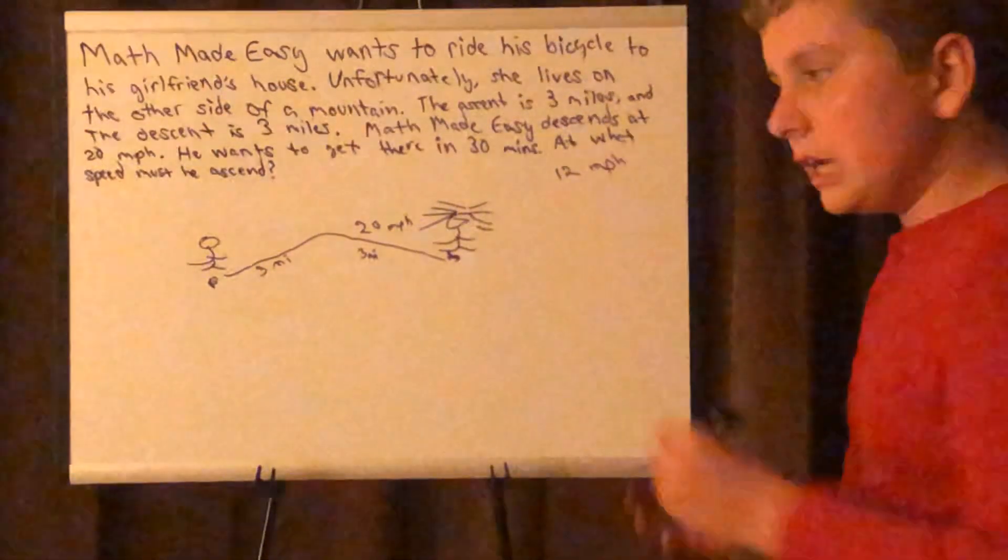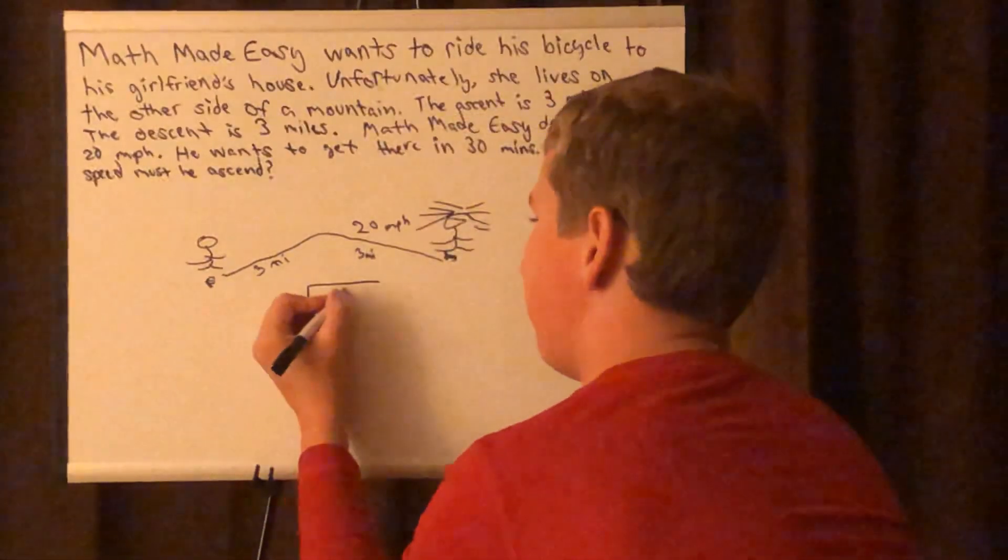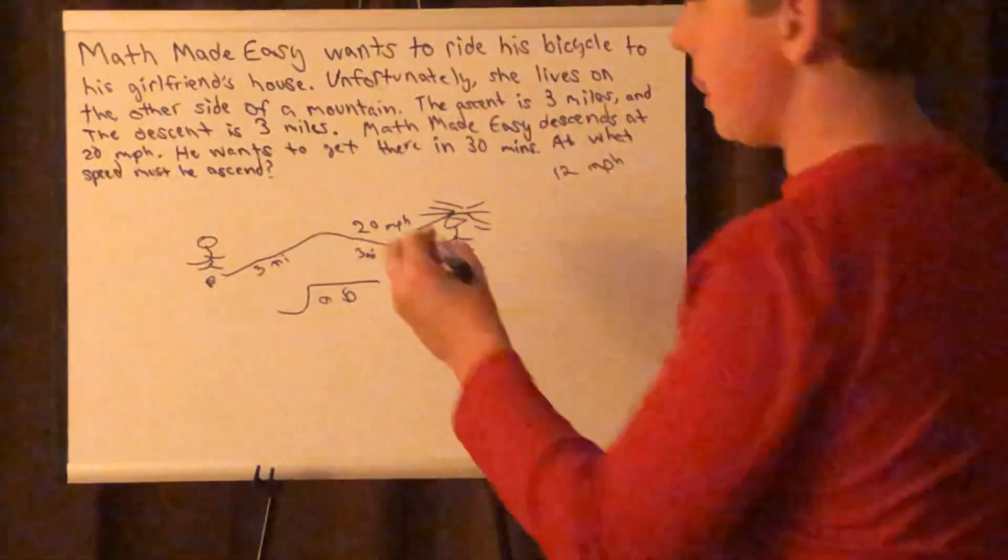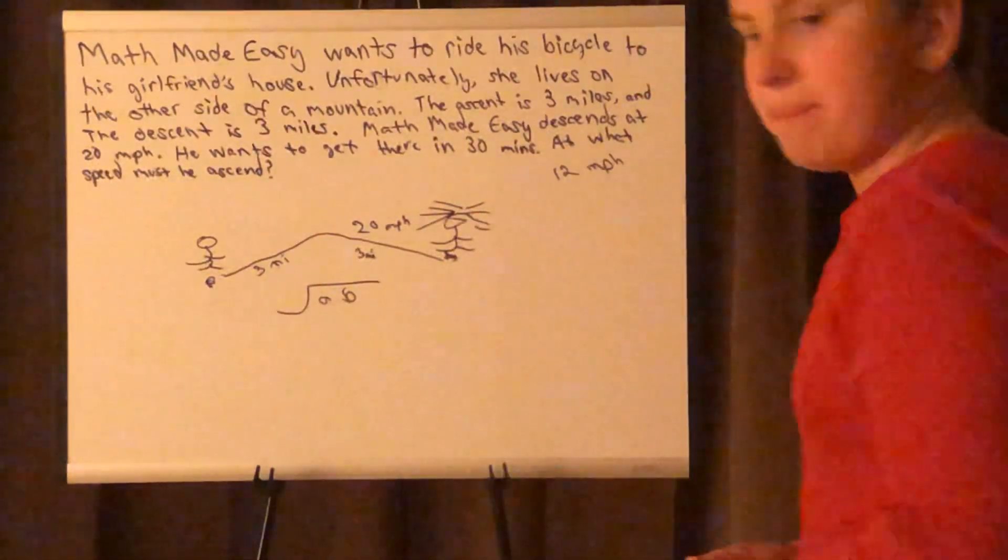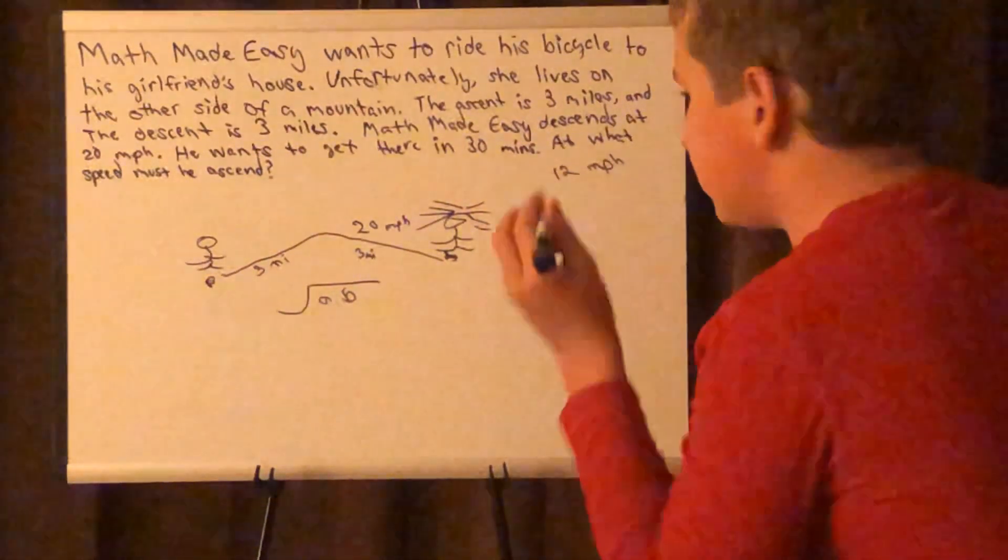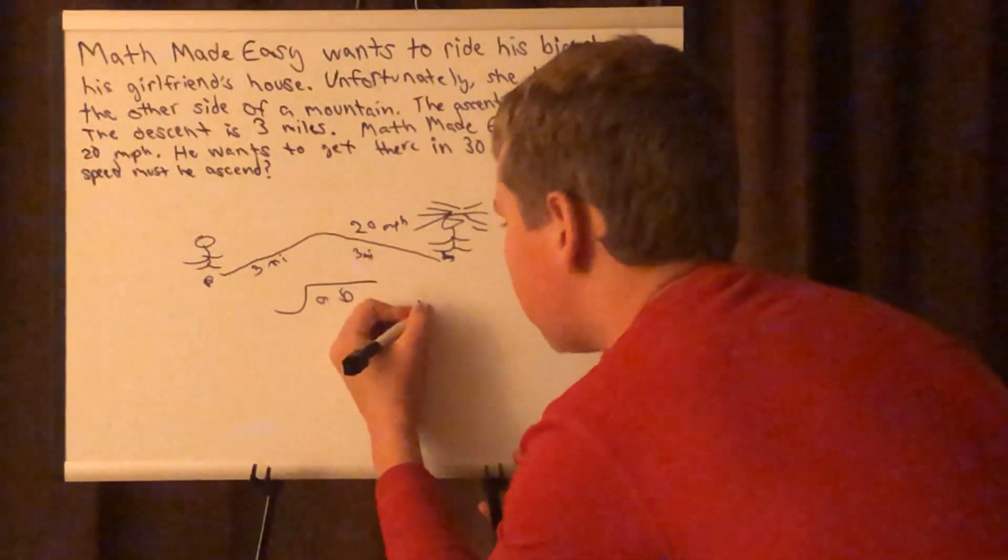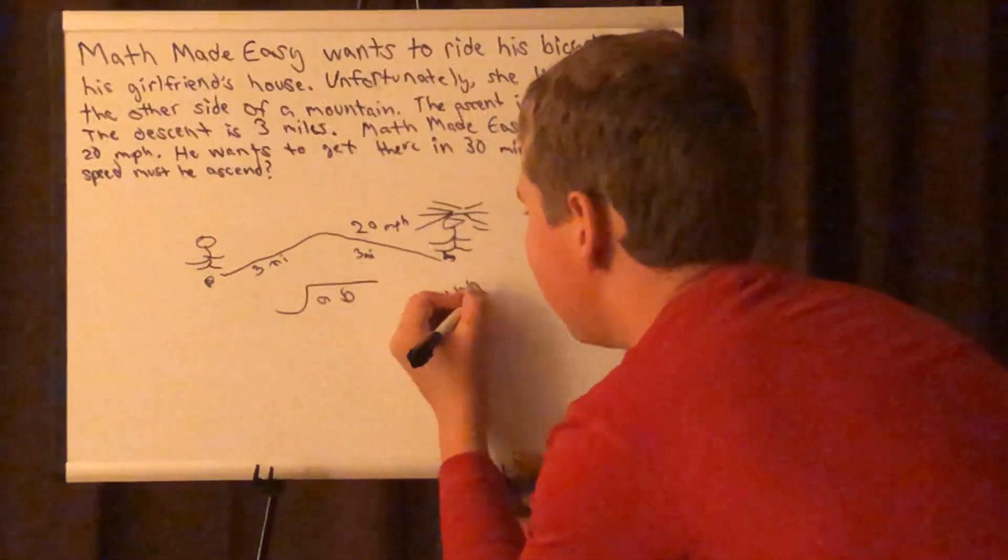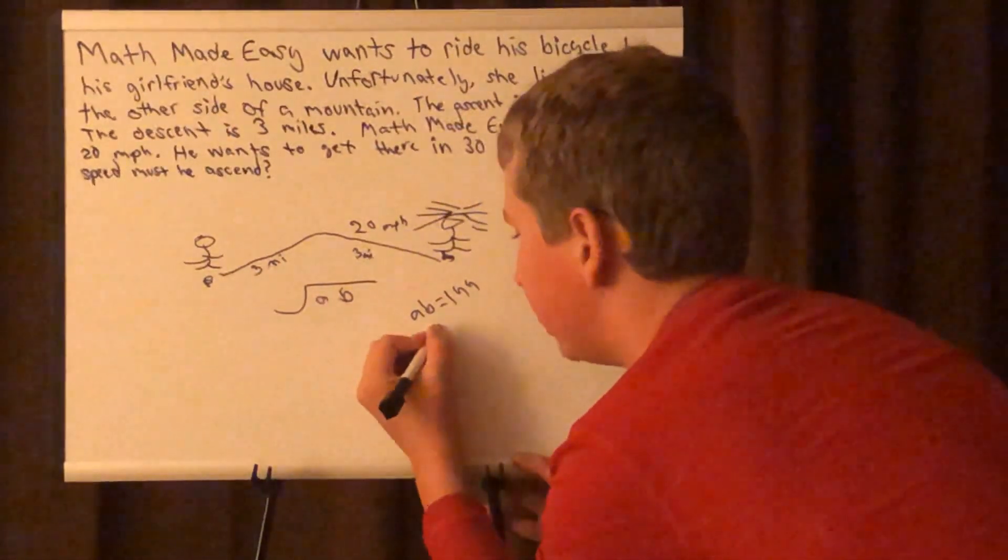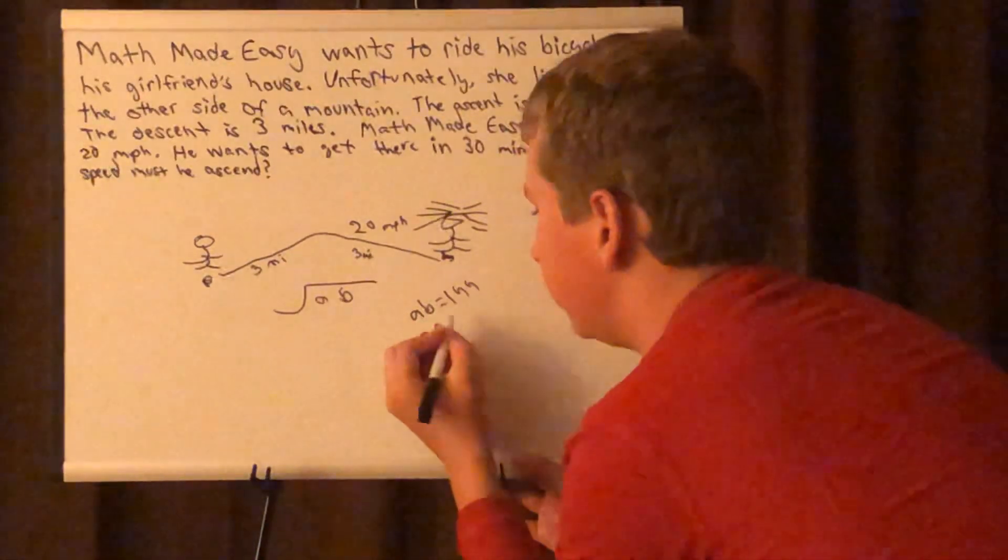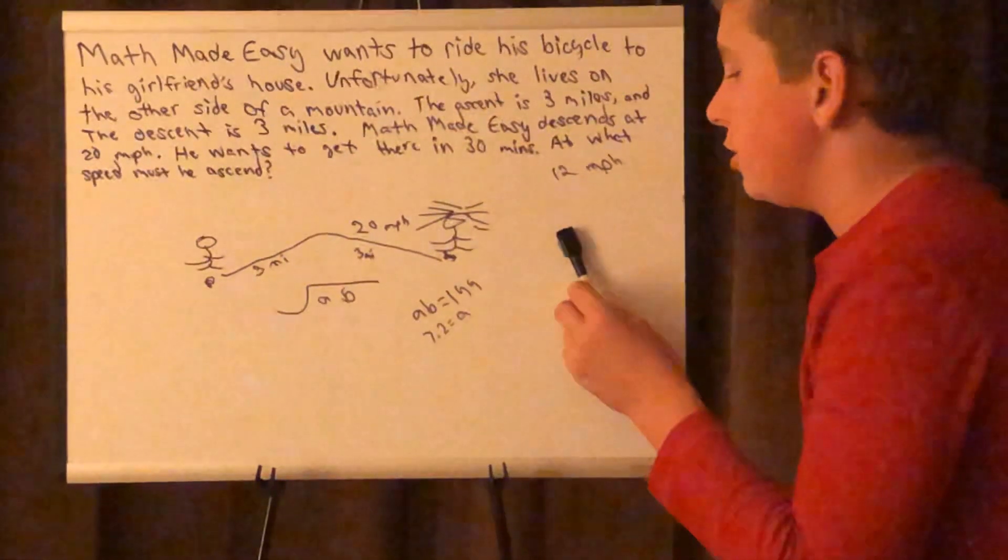So geometric mean, once again, is the square root of AB. Okay, A times B. This is going to be our A, 20 is our B, and we need this to equal 12. So that means AB, square both sides, equals 144. Divide both sides by 20 and we get 7.2 equals A. It should be A equals 7.2, but you get the point.